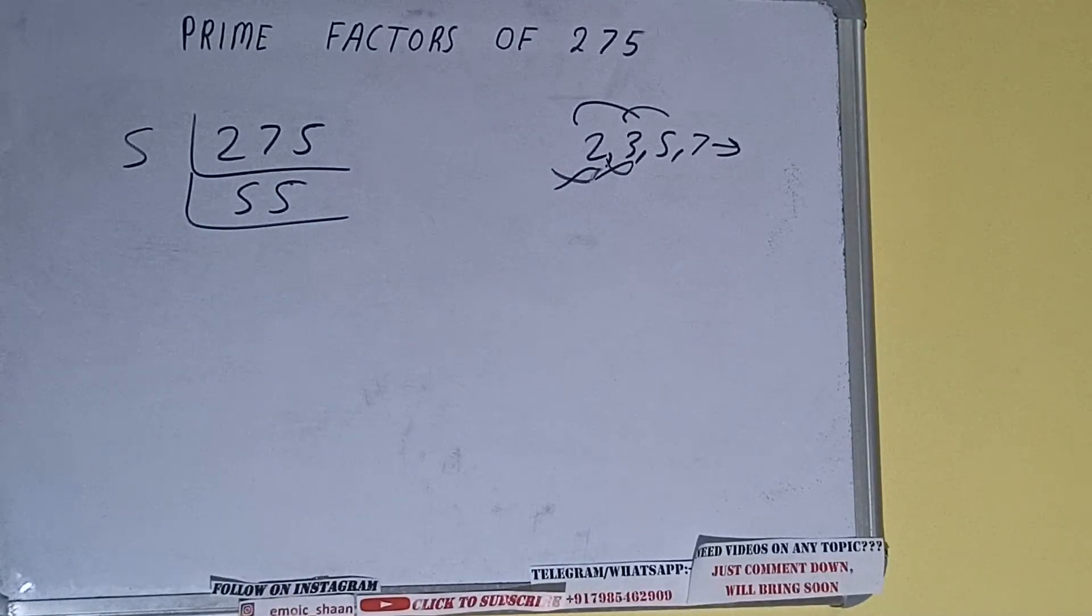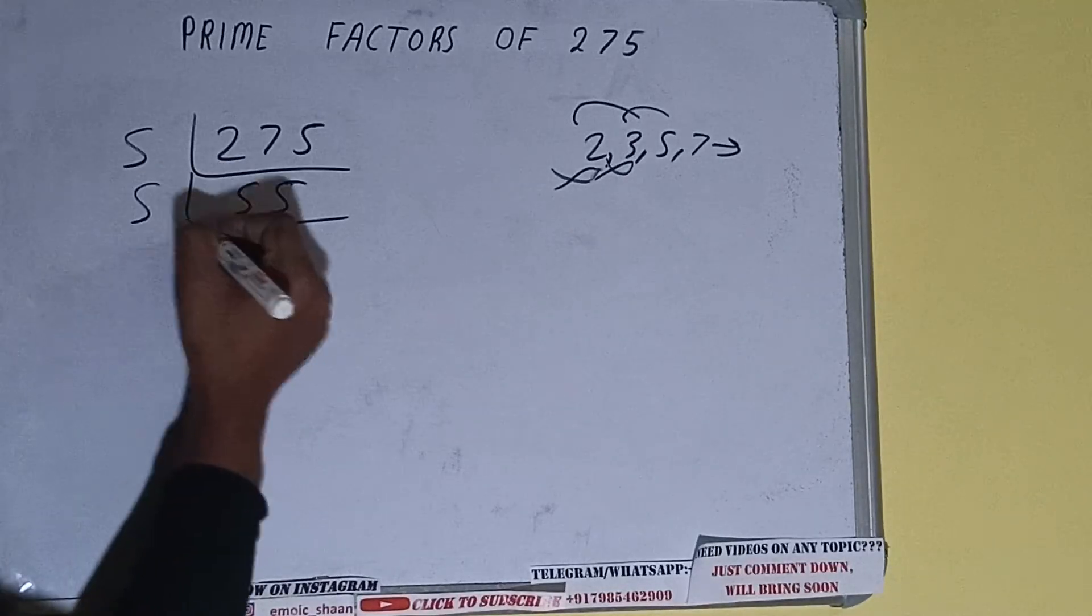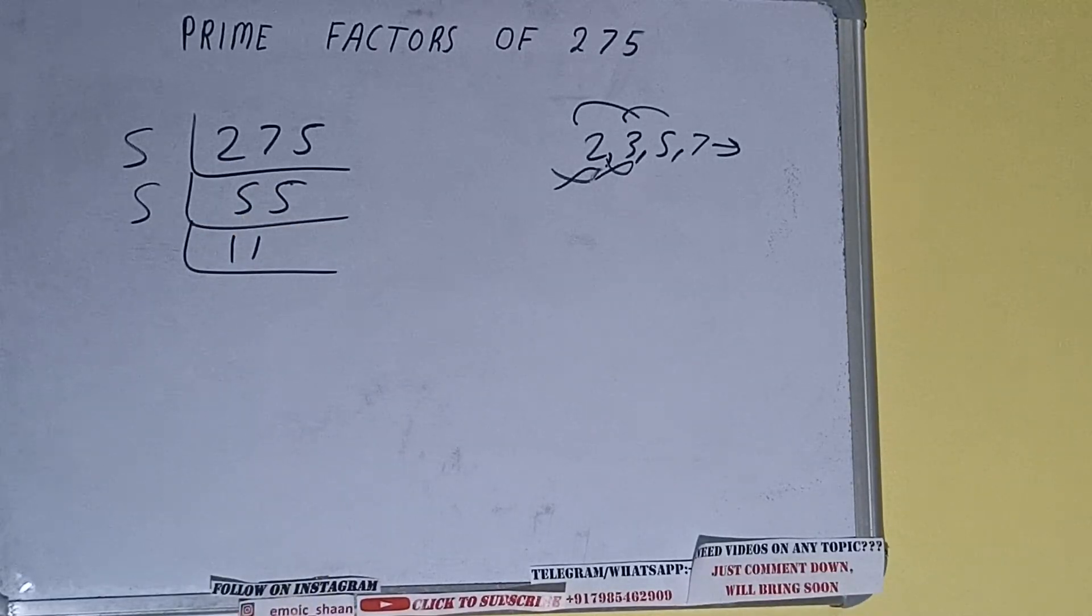And 55 is again divisible by five. We'll be having 11. 11 is not divisible by five.